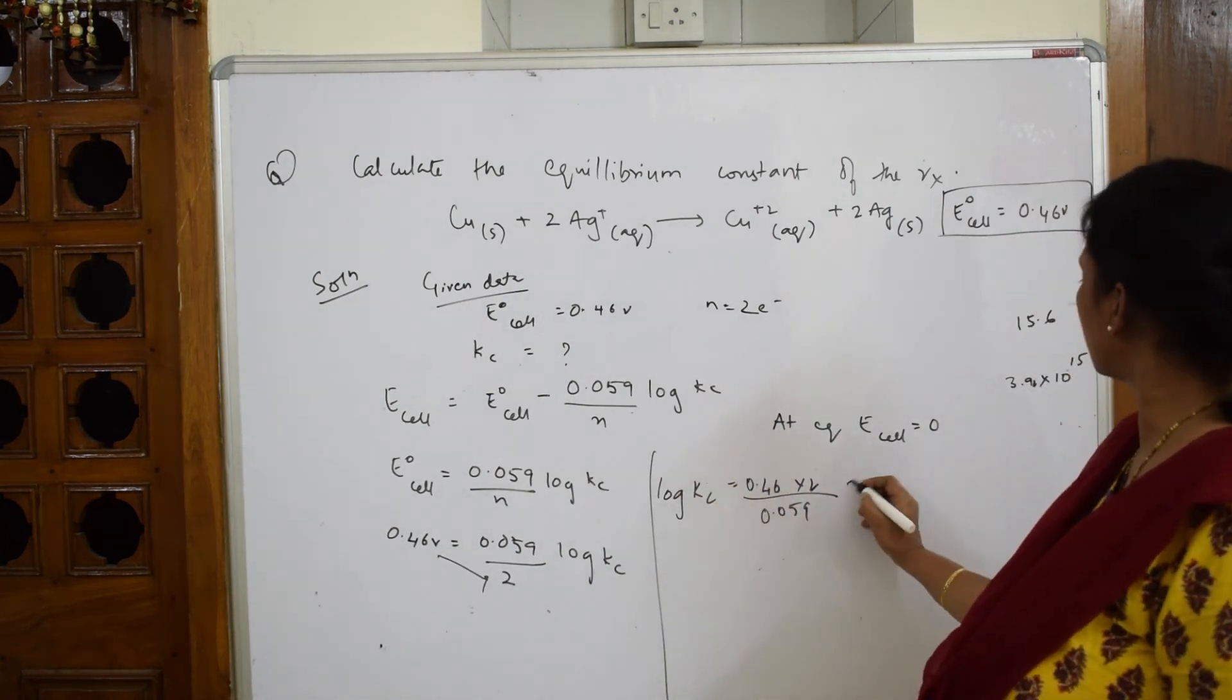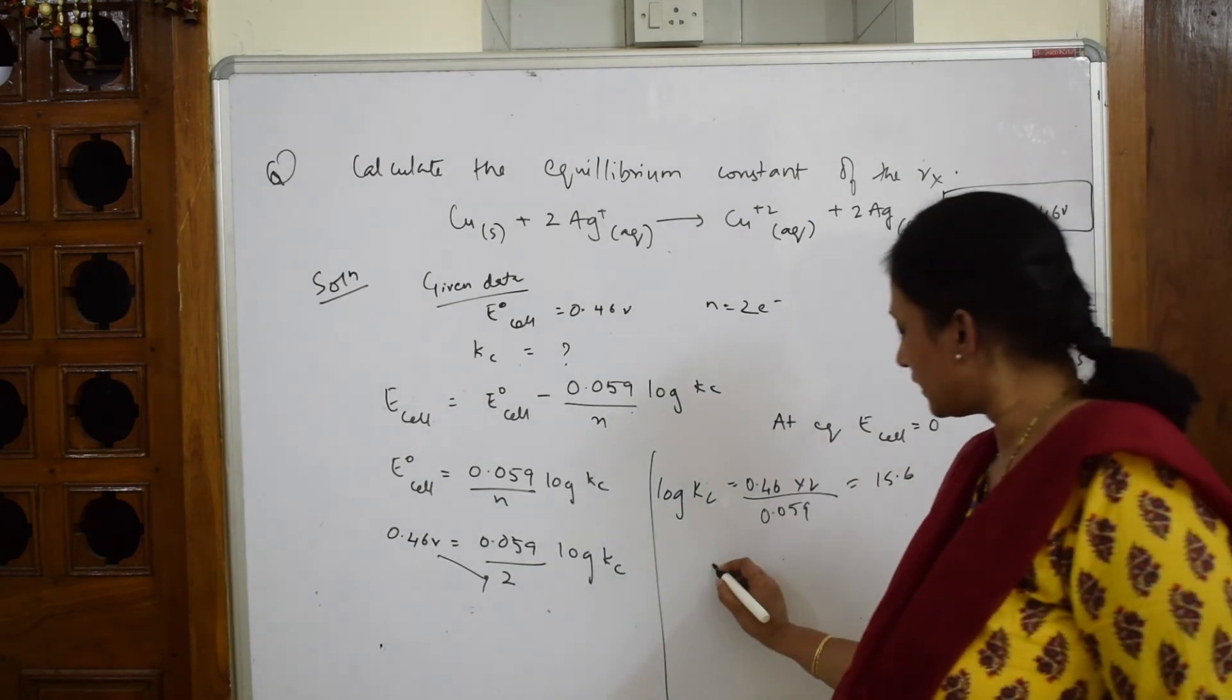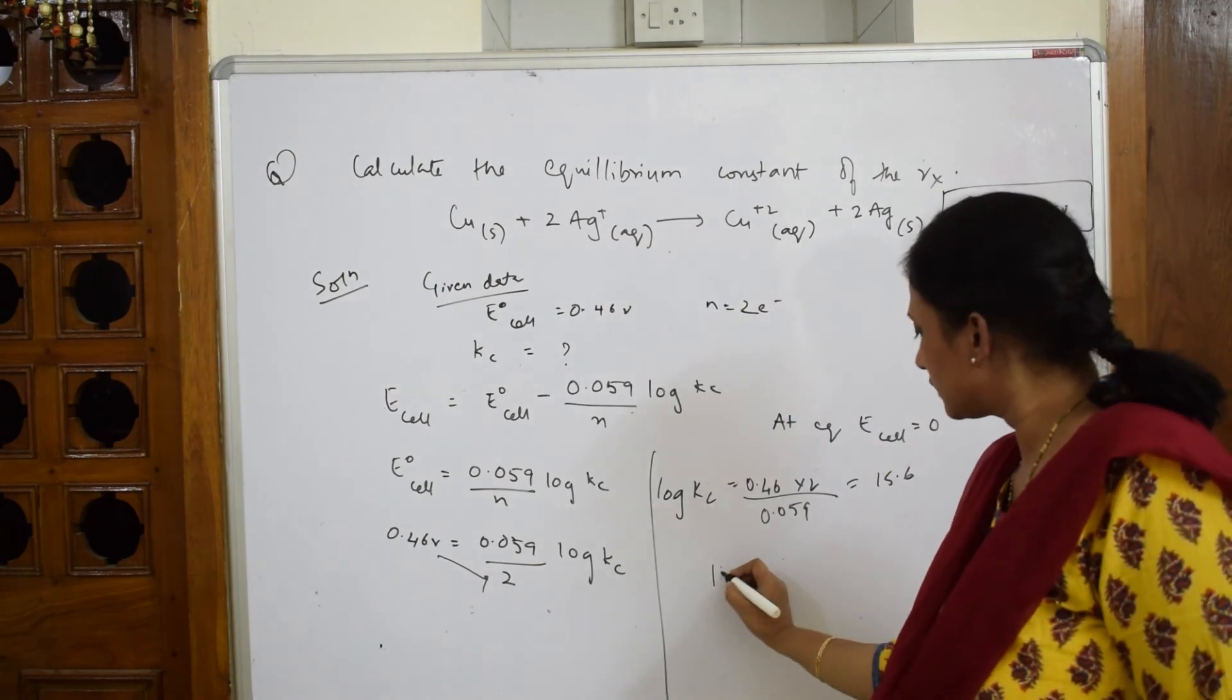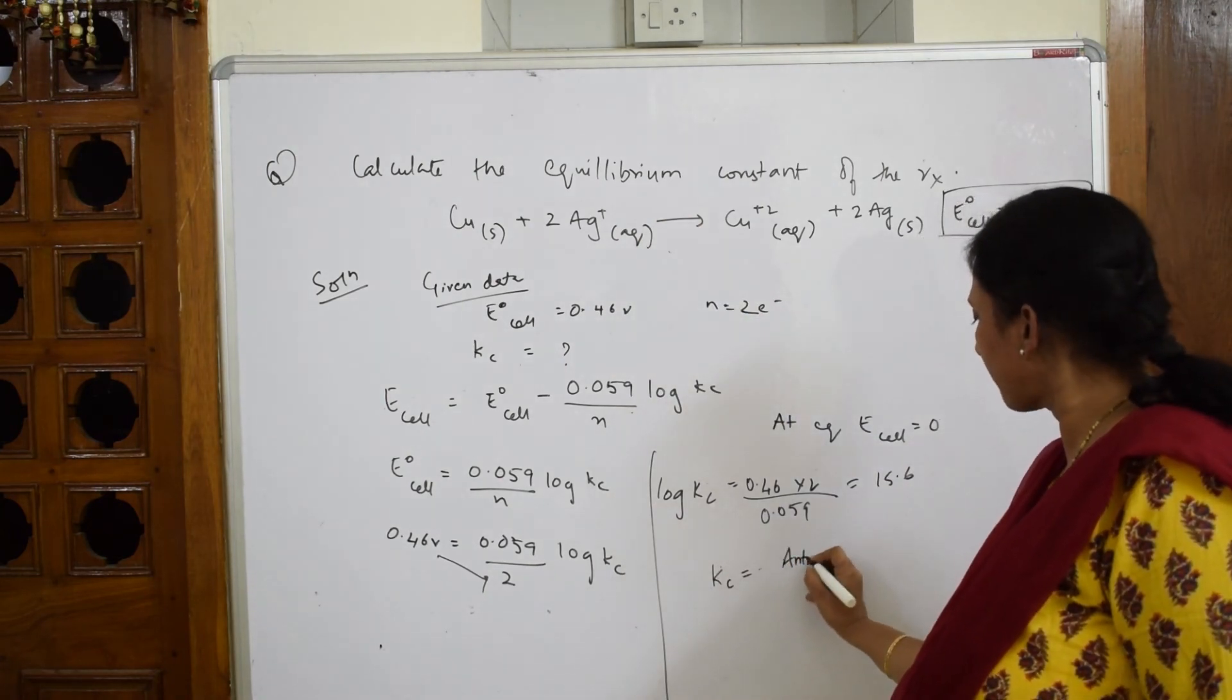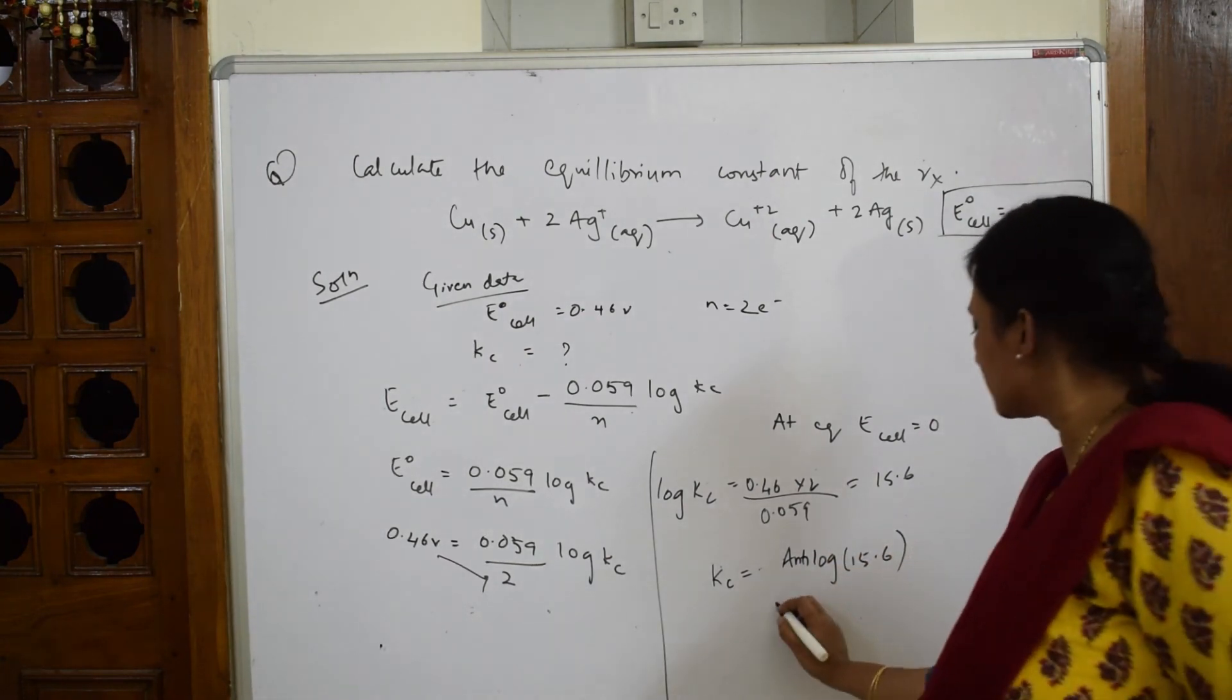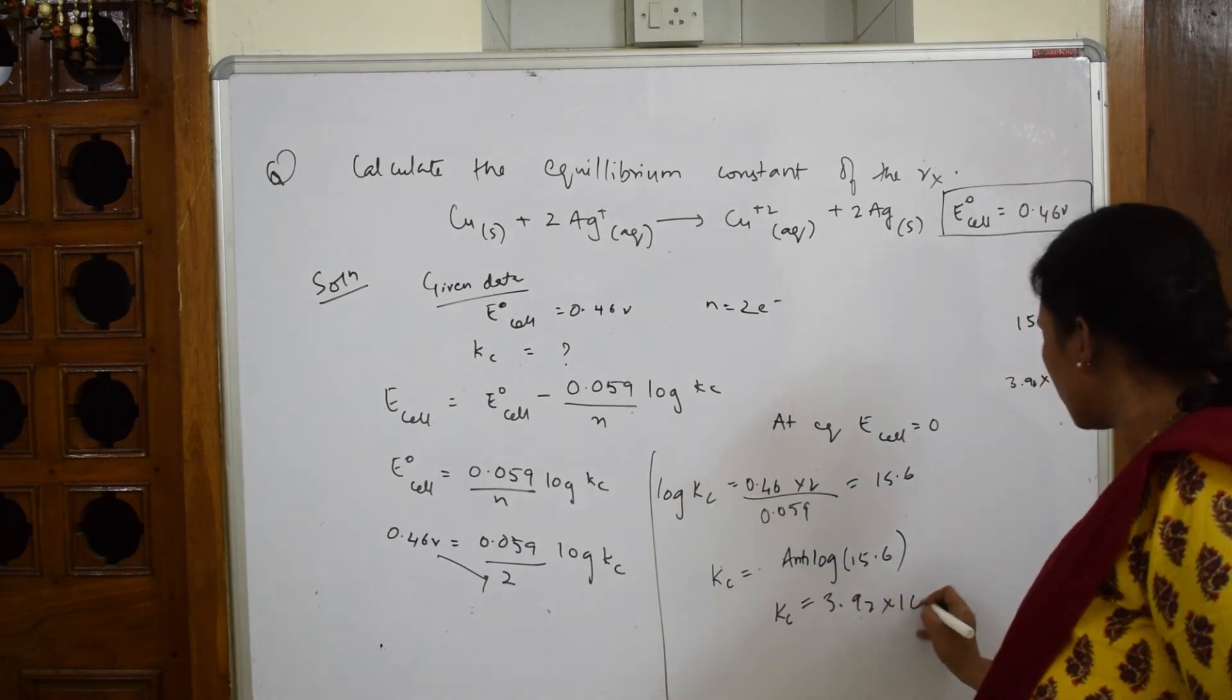Now I have to find only Kc, isn't it? Only equilibrium constant they asked. So Kc is equal to antilog 15.6. Kc value I get equal to 3.92 into 10 to the 15. This is your answer.